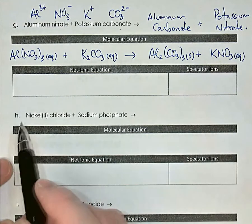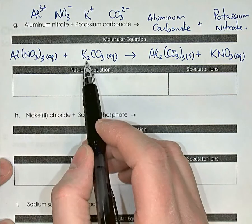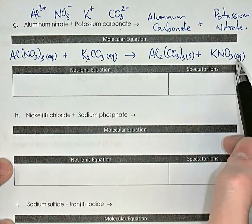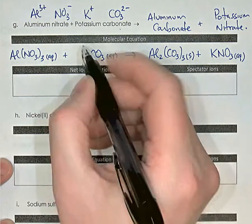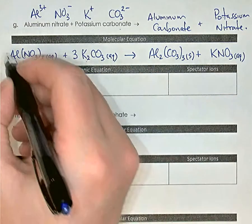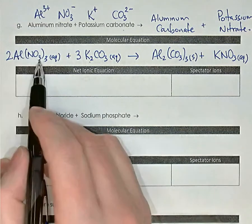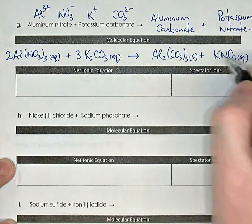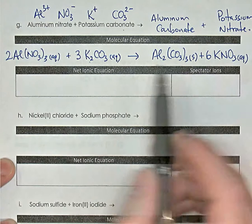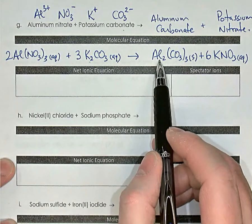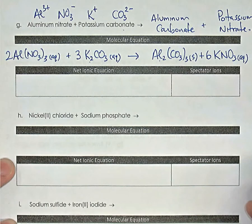Now to balance the equation: we have 3 nitrates and 2 potassiums on the left, and KNO₃ on the right. The lowest common multiple of 3 and 2 is 6, so we put a 3 in front of K₂CO₃ and a 2 in front of Al(NO₃)₃ — that gives 6 nitrates and 6 potassiums, so we put a 6 in front of KNO₃. That also balances the aluminums and the carbonates. There's the balanced molecular equation.